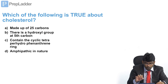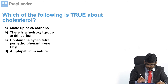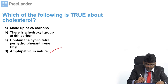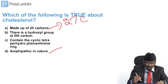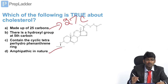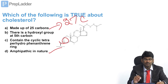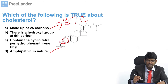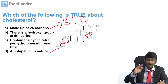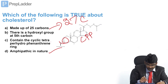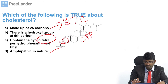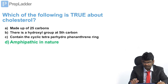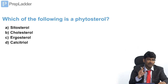Which of the following is true about cholesterol? Amphipathic nature — that is true. Made up of 25 carbons — no, it is 27 carbons. Hydroxyl group on the 5th carbon — no, the hydroxyl group is on the 3rd carbon. Contains cyclic tetra-perhydrophenanthrene ring — no, the ring is the cyclopentanoperhydrophenanthrene (CPP) ring. It is not tetra, it is pentano. The correct answer is amphipathic in nature.